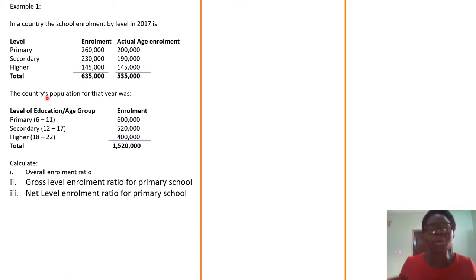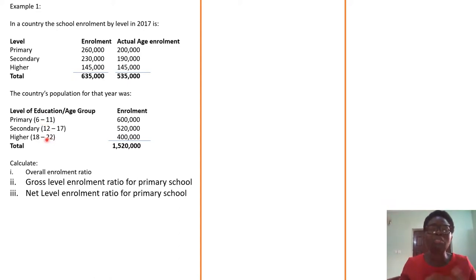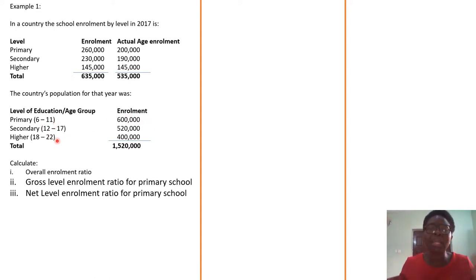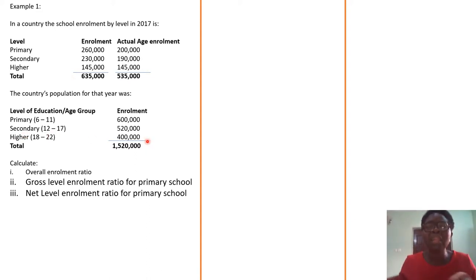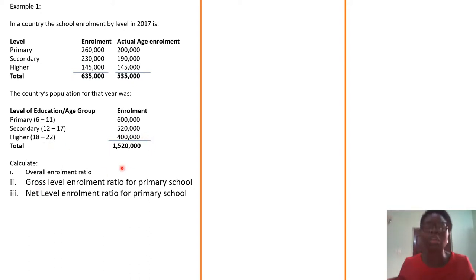The country population for that year is broken down by age group. From age 6 to 11, you have 600,000. From 12 to 15, the secondary school age group, they are 520,000. And for the higher institution age group 18 to 22, you have 400,000, with a total of 1.5 million.